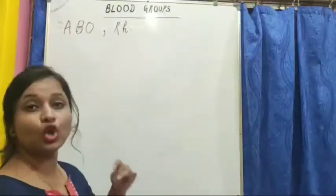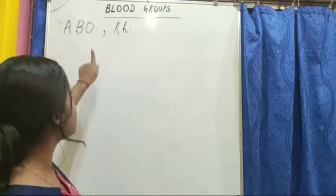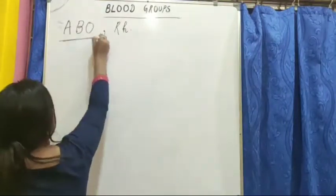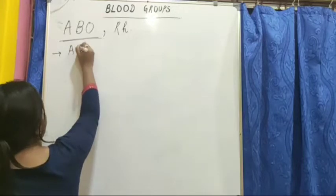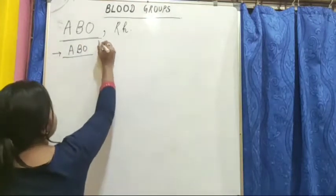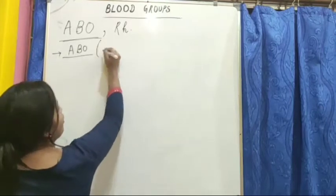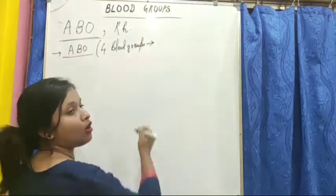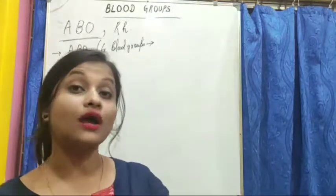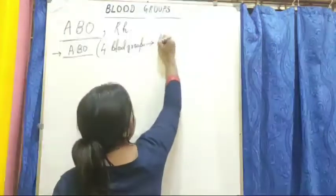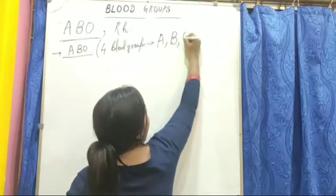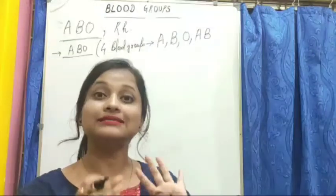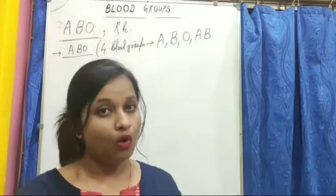So today we will be discussing the ABO blood group system, and then we will study the RH blood group. Under the ABO blood group system, there are four blood groups: blood group A, blood group B, blood group O, and blood group AB.